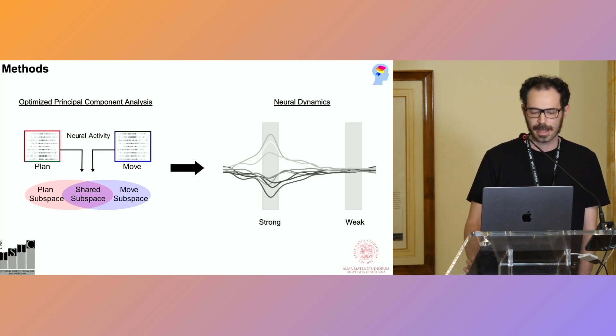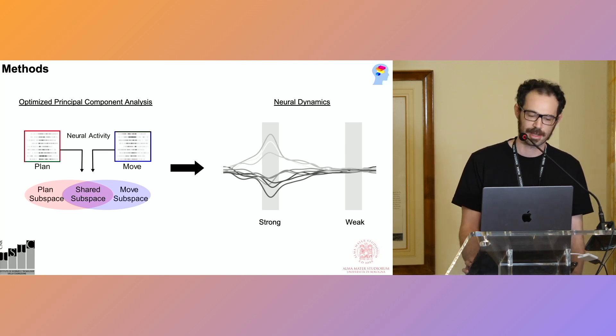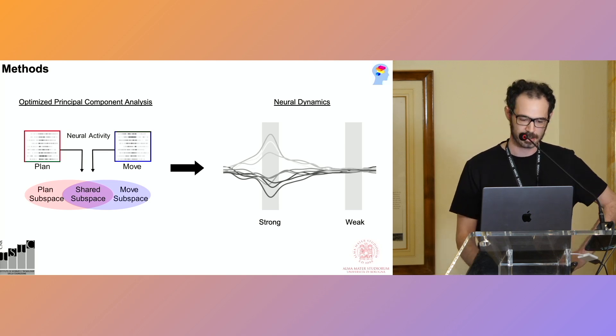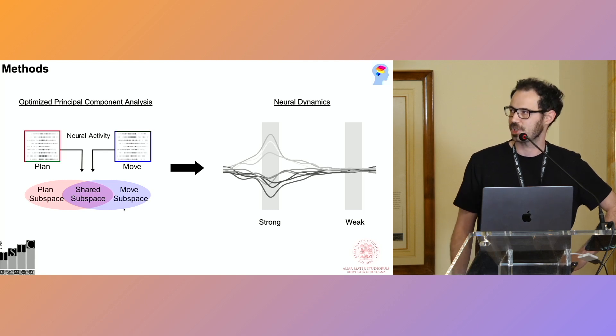I have applied an optimized version of principal component analysis that basically gives us the opportunity to explain the neural variability simultaneously in the two epochs and gives us the possibility to extract different kinds of subspaces: exclusive subspaces that I have called plan subspace and move subspace, and a shared subspace.